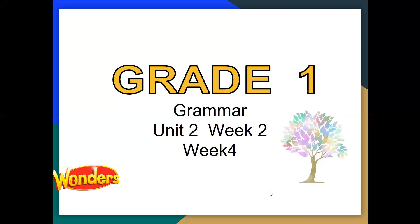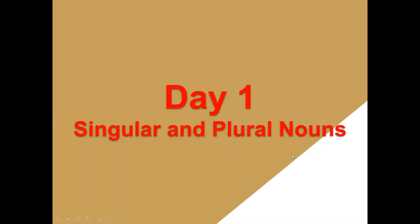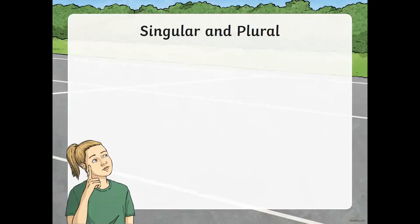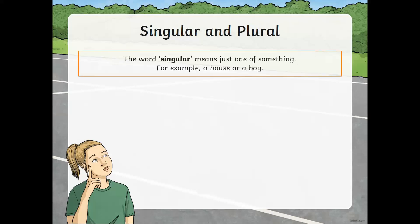Hello everyone, welcome! Today's English phonics lesson will be grammar: singular and plural nouns. The word singular means that we have only one of anything — like a house, a boy, or a dog. One dog, one house, and one boy.